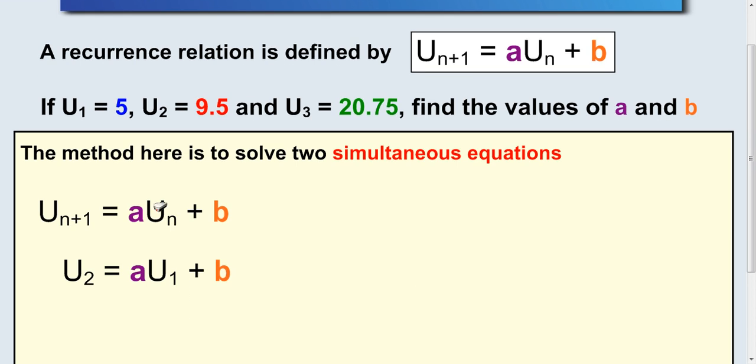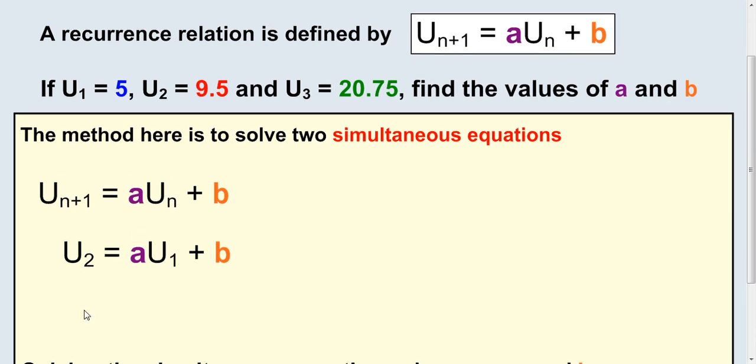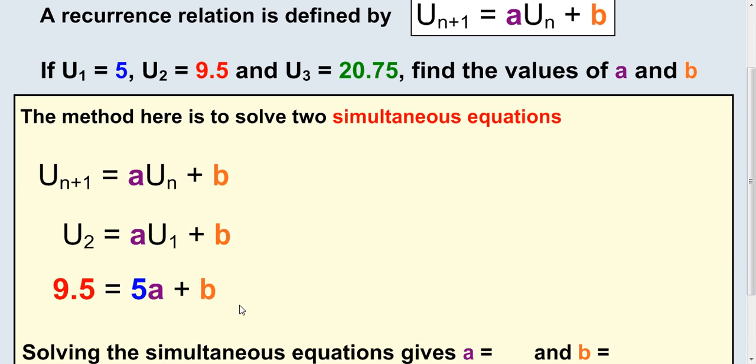Substitute u of 2 and u of 1 here instead of these, and then put the numbers in. So 9.5 equals 5a plus b. That's one equation with some numbers.